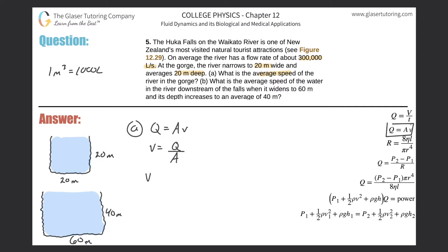Now we can find the velocity. The volume flow rate is 300,000 liters per second, so I divide by 1000 to get that into cubic meters per second. The area is length times width, so it's 20 meters times 20 meters. 300,000 divided by 1000, then divided by 20 times 20, gives us about 0.75 meters per second.